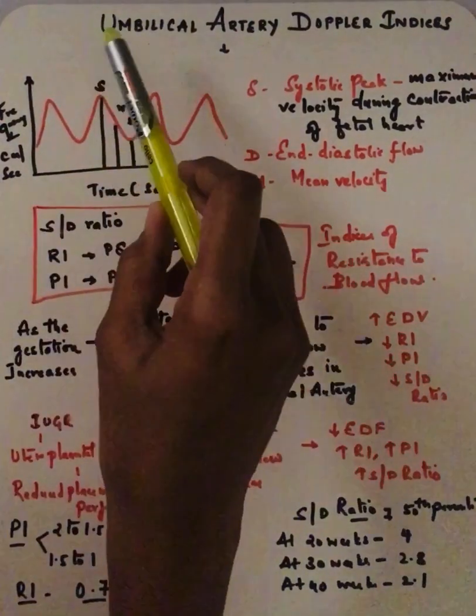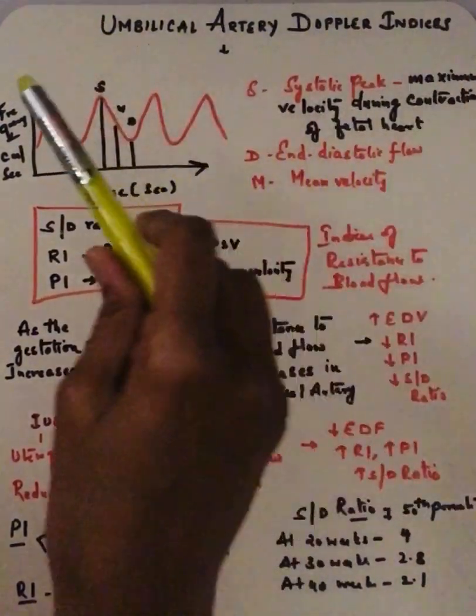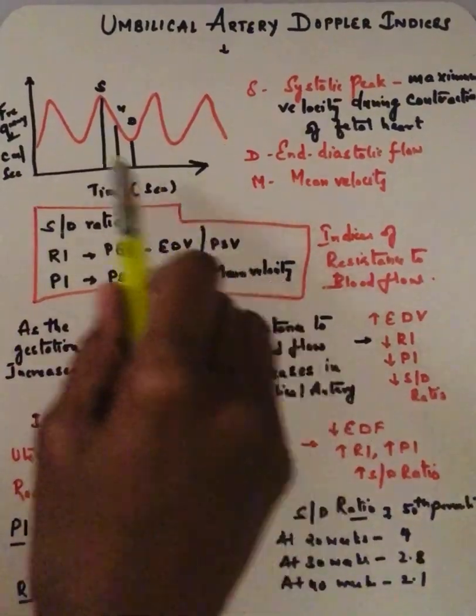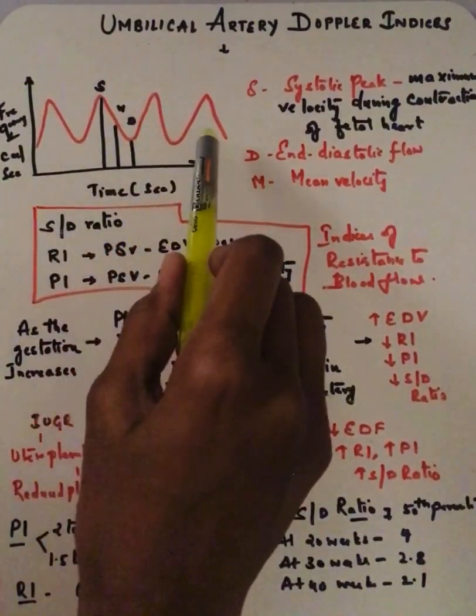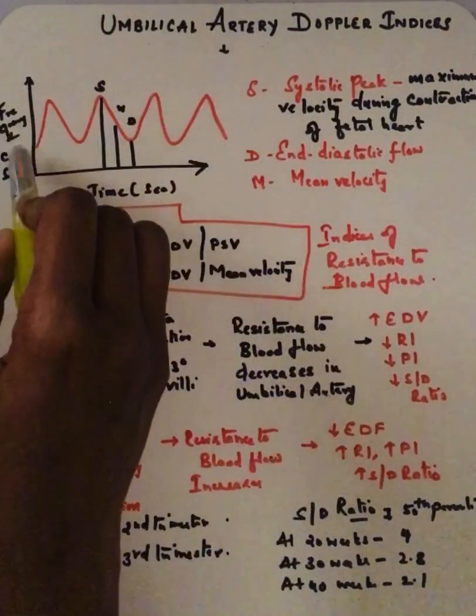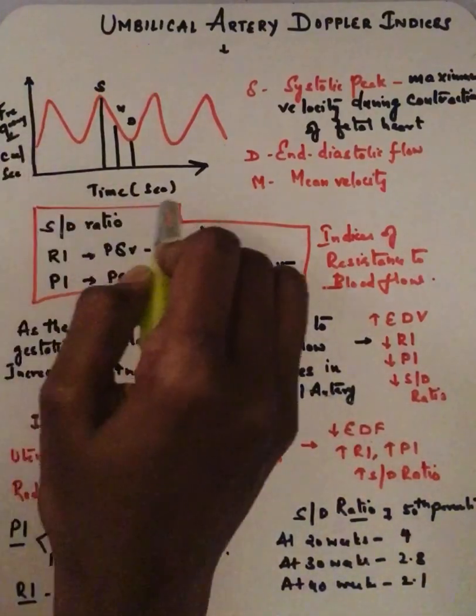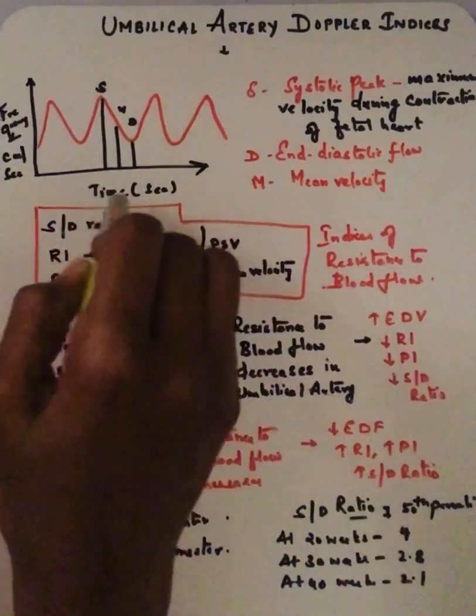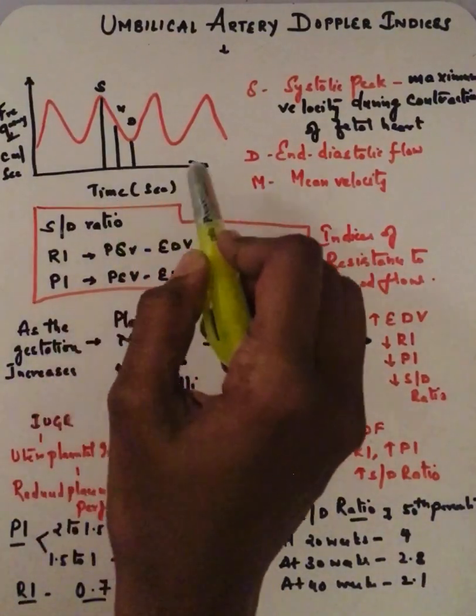Hi everybody, today we'll be discussing umbilical artery Doppler indices. This is a normal umbilical artery Doppler waveform. On the y-axis we have frequency, which is measured in centimeters per second—that's velocity. On the x-axis we have time, the cardiac cycle time, which is measured in seconds.